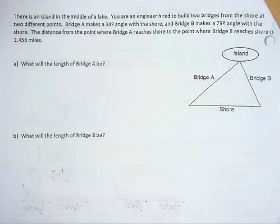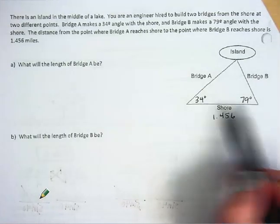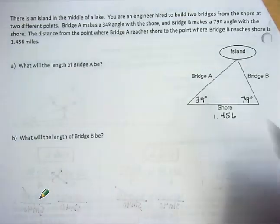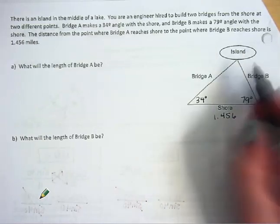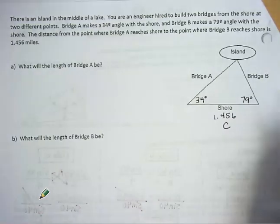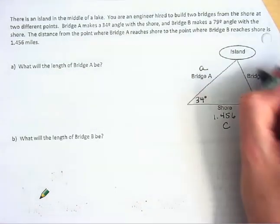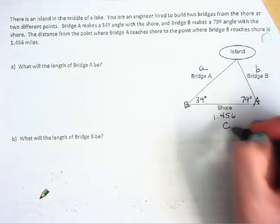We're going to do the word problem on the back. Pause your video, read the problem, and label the drawing with the given information. Here's my given information labeled in the picture. I'm going to identify my sides and angles as A, B, and C so that when I set up my proportions I'm clear about which things go together. I'll call this side C, which makes angle A equal to 79 degrees.